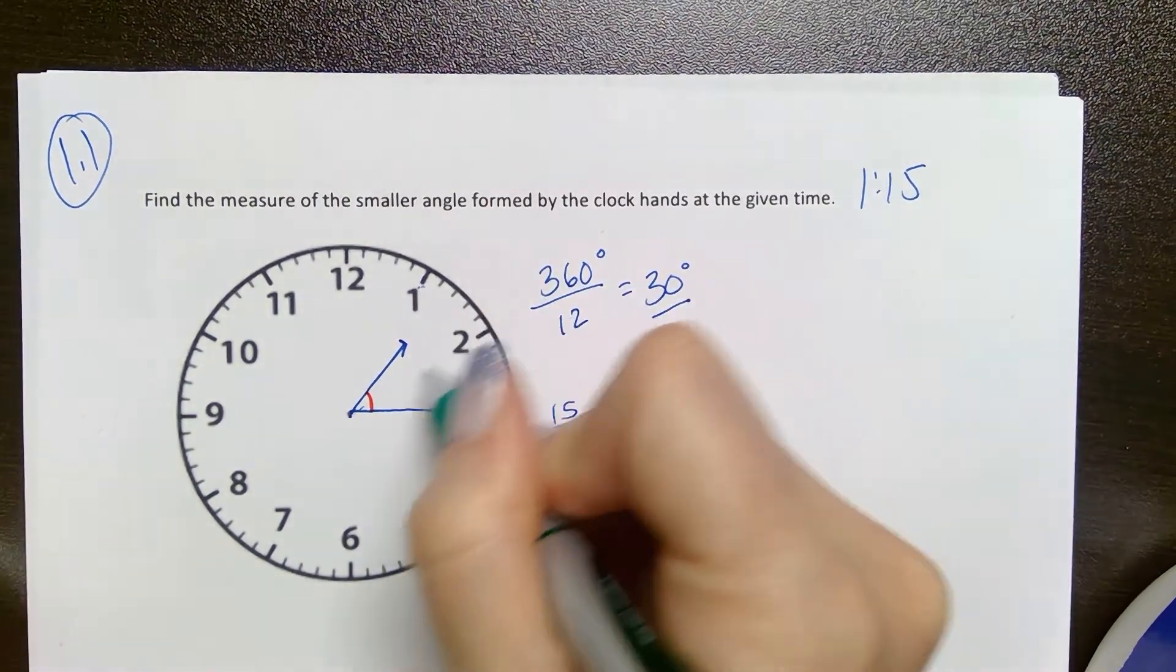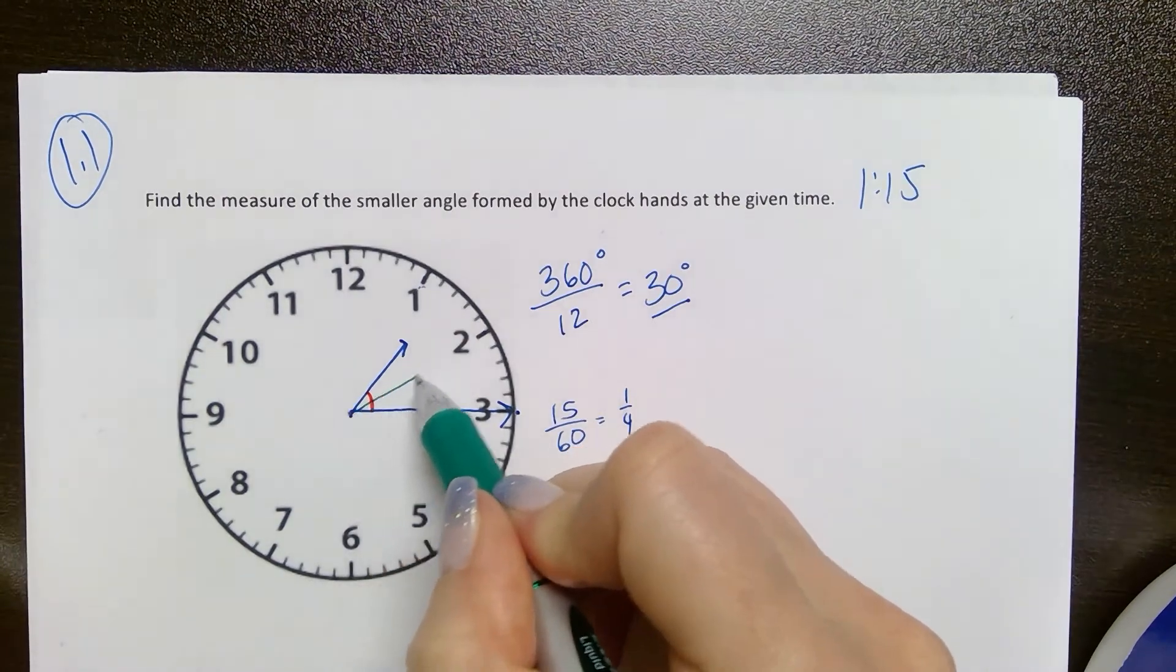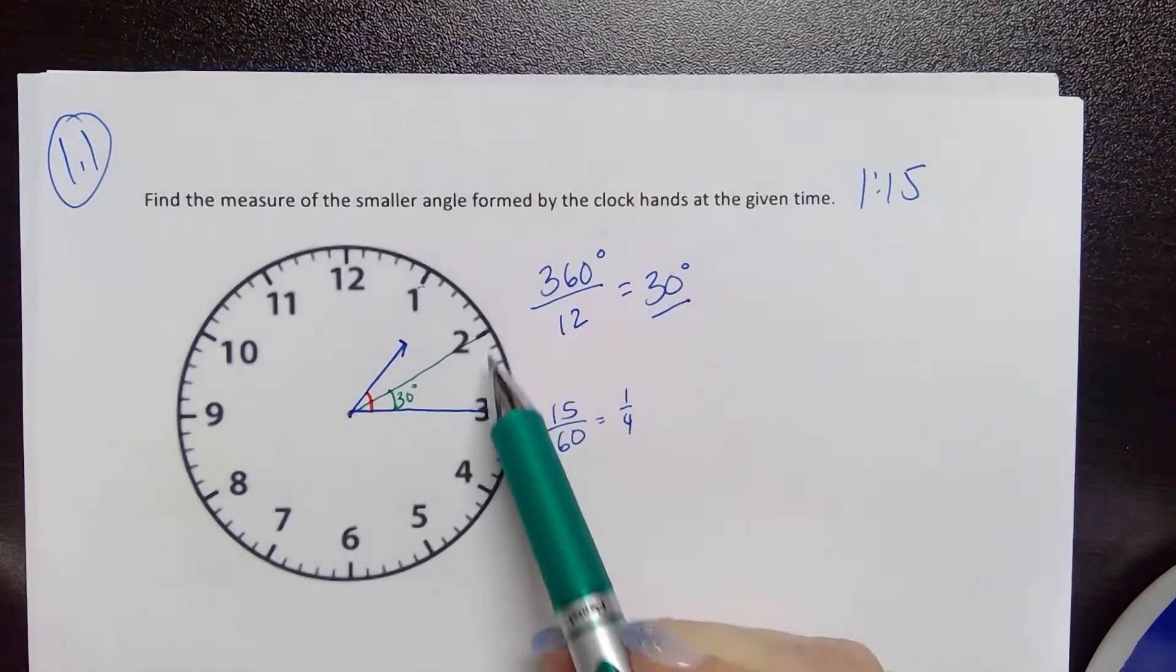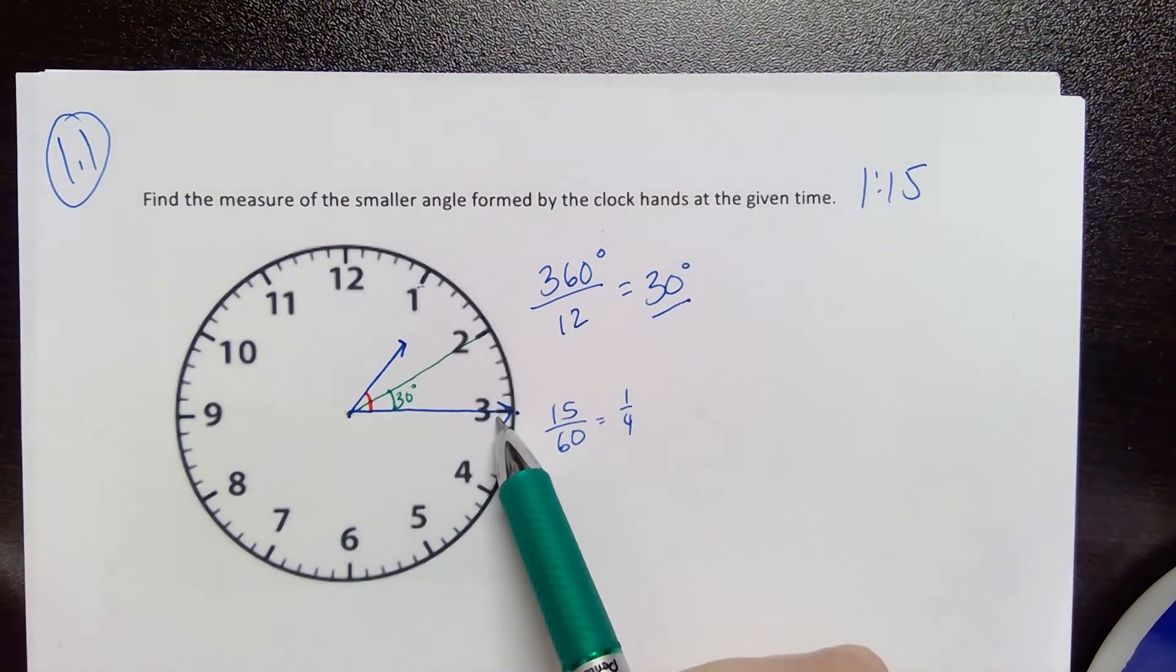I know that for the angle between 2 and 3, that is 30 degrees because that is a full twelfth of my rotation around the clock face.